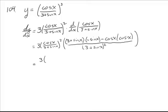So, let's do this. We've got 3, and let's break this up. We've got cosine squared x on top. We've got 3 plus sine x squared on bottom.